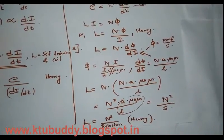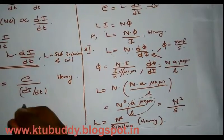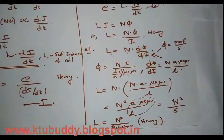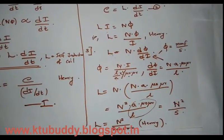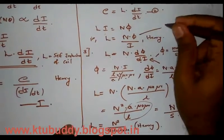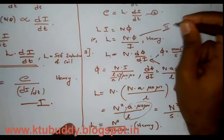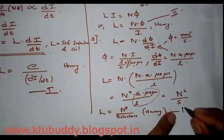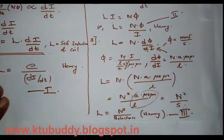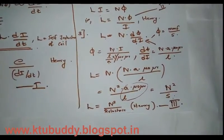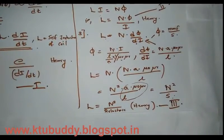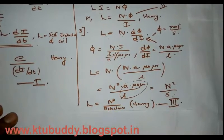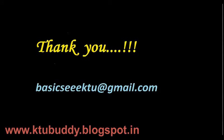So these are the three expressions for self-inductance. The first expression is L = e / (di/dt). The second expression is L = Nφ/i. The third expression — which is important as it considers the physical parameters of the coil — is L = N² / S, where N is the number of turns and S is the reluctance offered by the coil. Thank you.